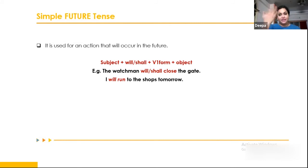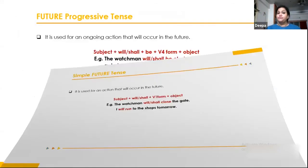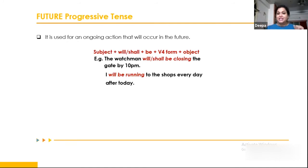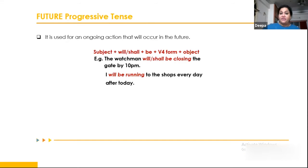Future progressive tense describes an ongoing action that will take place in the future. The structure is: Subject + will/shall + be + V4 + Object. For example: 'The watchman will be closing the gate by 10 p.m. from tomorrow.' 'I will be running to the shops every day after today.' We are talking about an action that will continue to happen in the future.